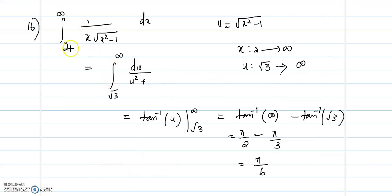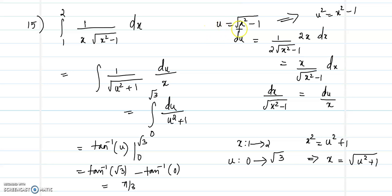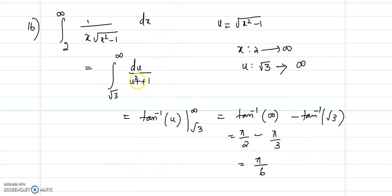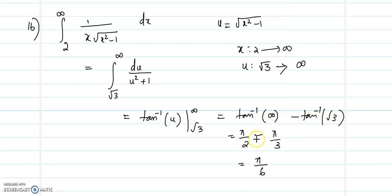Question number 16: we need to evaluate the integral from 2 to infinity of 1/(x√(x²-1)) dx. The integrand is the same as the previous question, so we will use the same substitution u = √(x²-1), giving new integrand 1/(u²+1). Here x varies from 2 to infinity, so u varies from √3 to infinity. The integral of 1/(u²+1) is tan⁻¹(u), giving tan⁻¹(∞) - tan⁻¹(√3) = π/2 - π/3 = π/6.